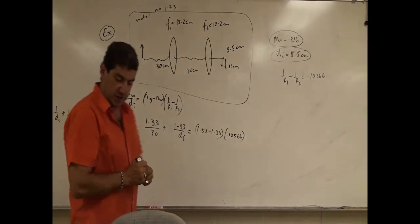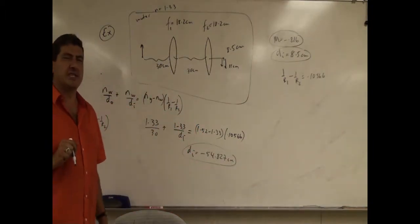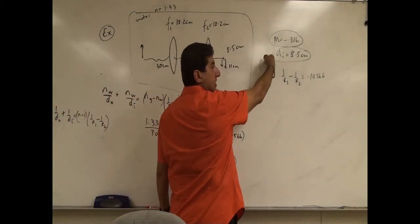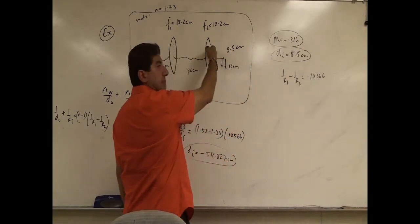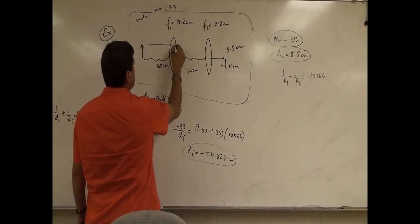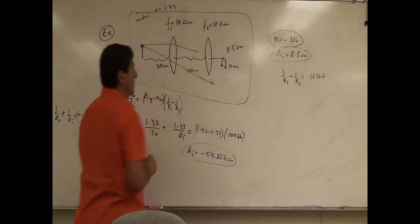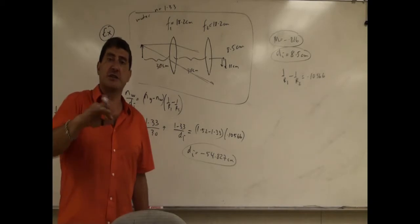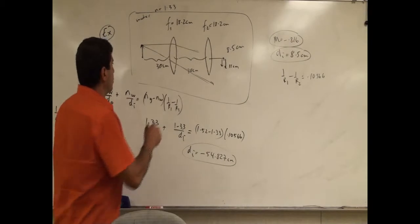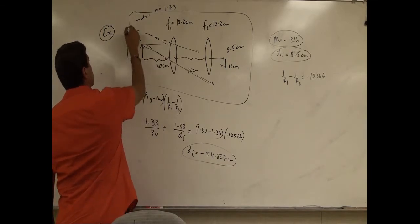Now let's calculate dI. It's very different from the situation in air. When this was in air, the first lens formed an image about 46 centimeters away on that side, which acted as a virtual object for the second lens. Now, dI is negative, meaning the light rays don't bend that much. Why? Because the index of refraction of water is very similar to that of glass. They look like they're producing an image about 54 centimeters away — a magnified virtual image.